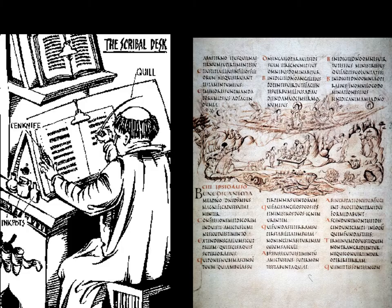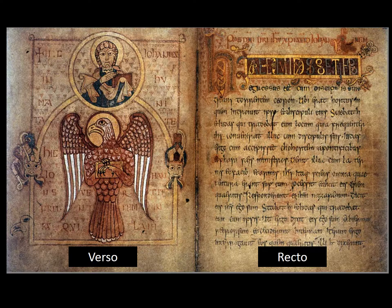These monks' entire job as scribes was recopying books. There were certain scribes who only did the writing, and then others whose job it was to do the illuminations, or illustrations — 'illuminations' is just the term for them. Some of the words we use to describe these pages come from the practice of books: verso and recto. The verso is the left side of the page; the recto is the right side of the page.